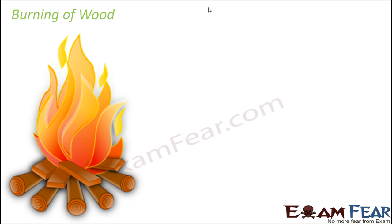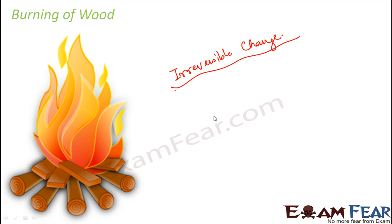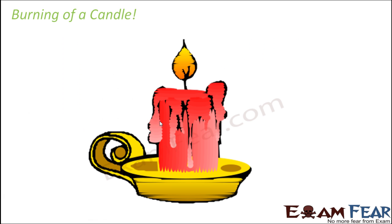Similarly, when you burn wood — burning as a process is generally an irreversible change. Wood contains carbon, and the carbon present in the wood reacts with oxygen in the air. During this process, a lot of energy is released, ash is produced, and smoke is produced. Once you burn the wood, those burnt ashes cannot give you the wood back — so this is an irreversible change.